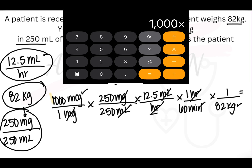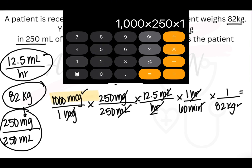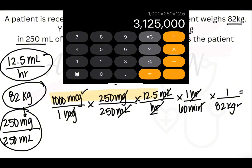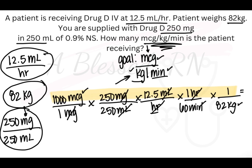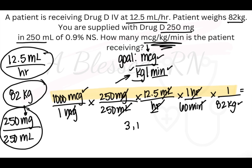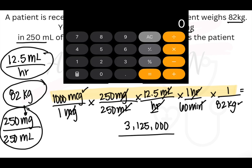Here's showing you how to do it in the calculator. 1,000 times 250 times 12.5. I don't include the ones when I do my calculations because they don't make a difference. Equals — 3,125,000. So we've got to make sure that we write down this number including all of the zeros. Now same for the bottom.